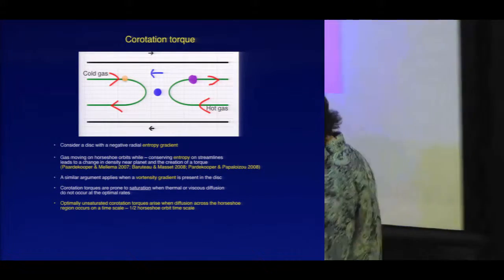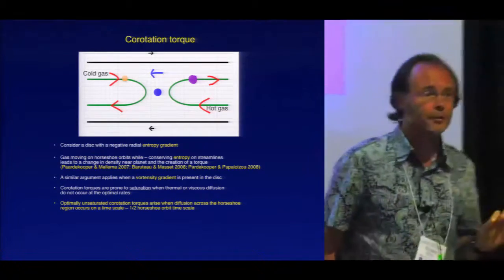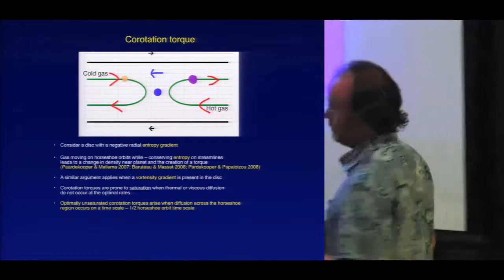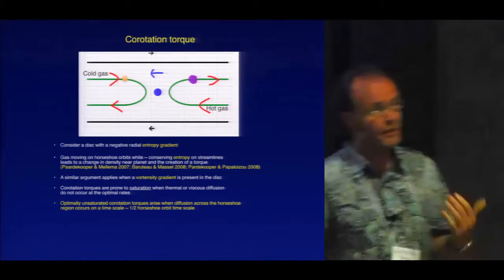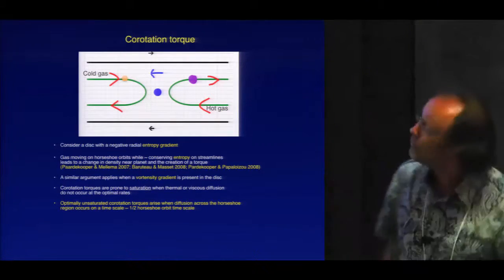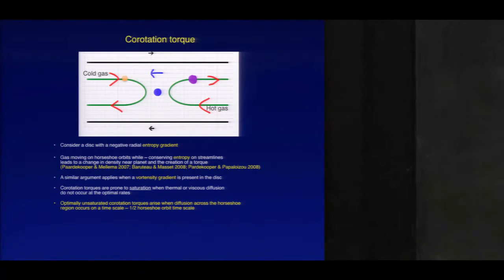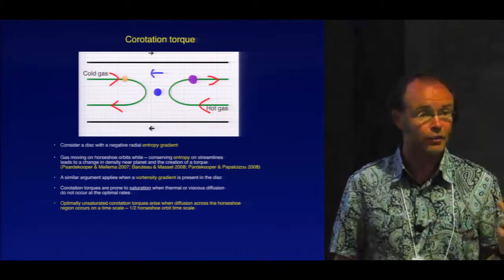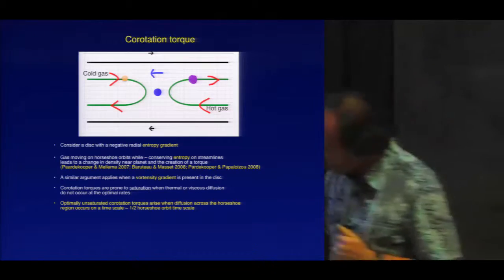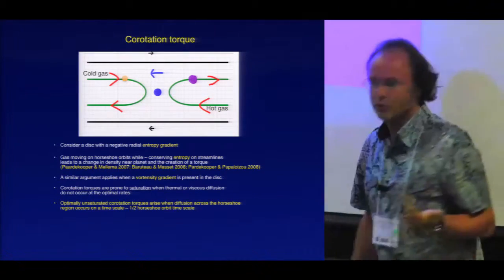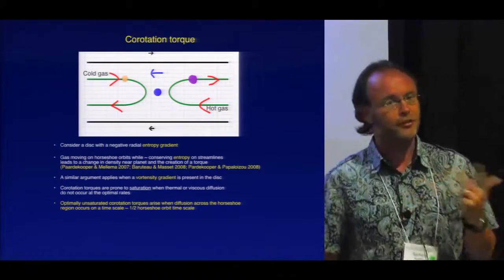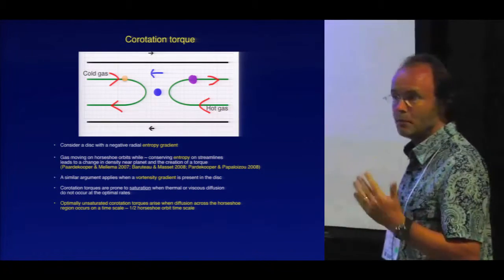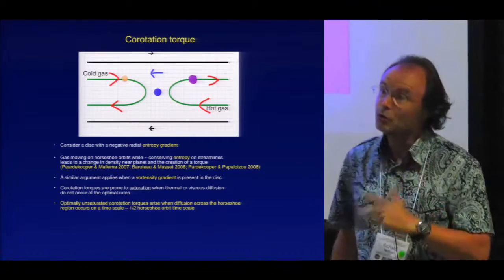Let me give a very simple explanation using the entropy gradient in the disk to explain how this operates. There are three limiting cases to consider, and two of them actually give rise to no net co-rotation torque at all. The interesting thing about the co-rotation torque is that it's not very robust — it depends on the microphysics operating in the disk, in particular on the cooling time.